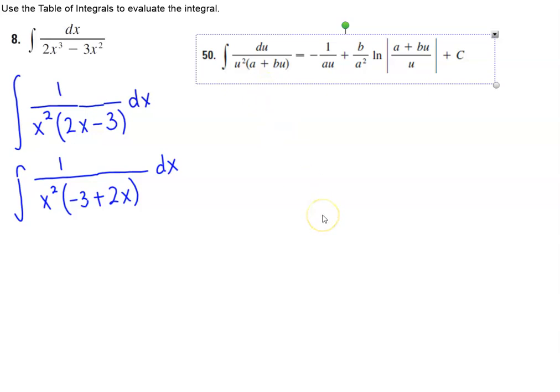So we can now just go ahead and use this rule here, where we know the following. So we know that u squared is going to equal x squared. We know that a is equal to negative 3, and we know that b is equal to positive 2.